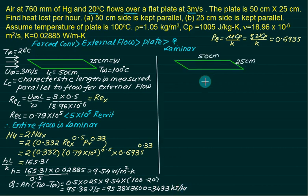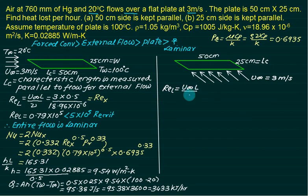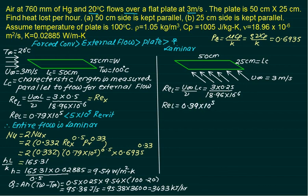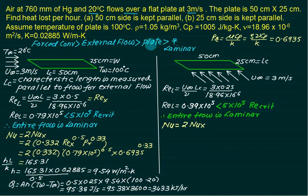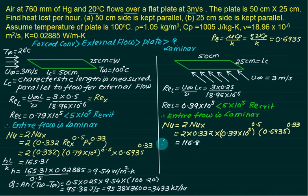Case 2: The 25 cm side is parallel to the flow, so L_c = 0.25 m. Re_L = 3 × 0.25 / 18.96×10⁻⁶ = 0.39×10⁵, still laminar. Using Nu = 2 × 0.332·Re_x^0.5·Pr^0.33, with Re = 0.39×10⁵ and Pr = 0.6935, gives Nu = 116.8. With k = 0.0285 and L_c = 0.25, the heat transfer coefficient h = 116.8 × 0.0285 / 0.25 = 13.48 W/m²·K.